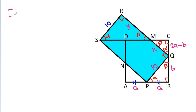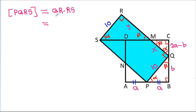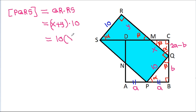Now, the area of PQRS will be equal to QR times RS. And QR is X plus Y, times RS is 10. So it is 10 times (X plus Y).